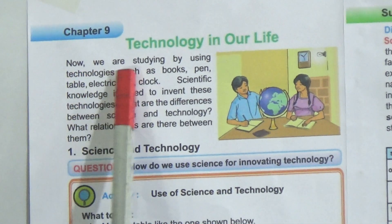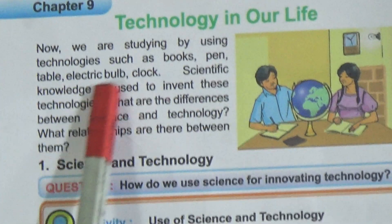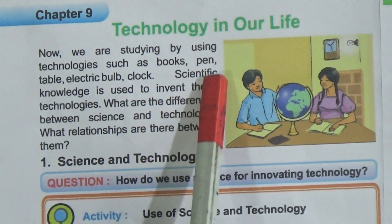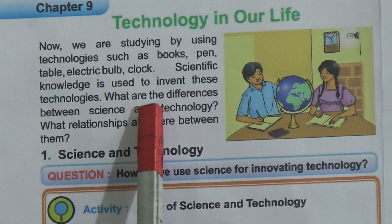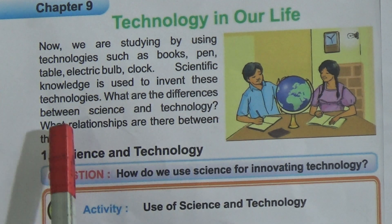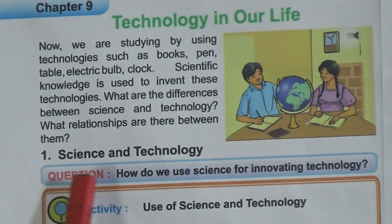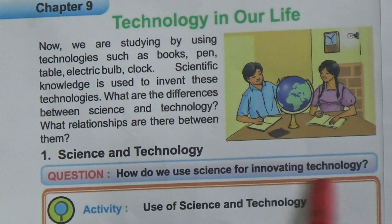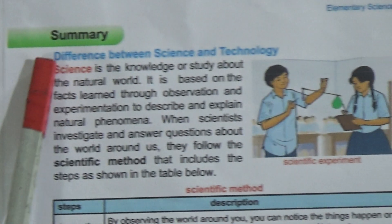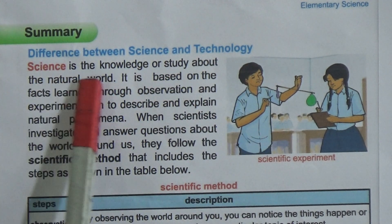The name of Chapter 9 is 'Technology in Our Life.' We are studying by using technology such as books, paints, table, electric bulb, and clocks. Scientific knowledge is used to invent these technologies. What is the difference between science and technology, and what relationship is there between them? The question arises: how do we use science for innovating technology?